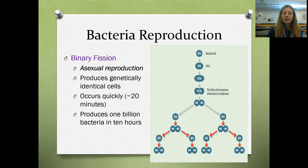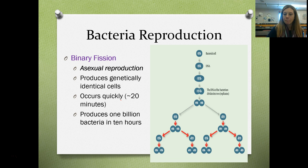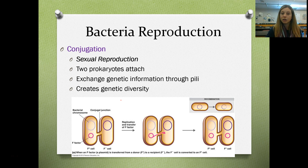Bacteria can reproduce in two ways — asexually or sexually. When bacteria reproduce asexually, it's called binary fission, essentially the same as mitosis — it produces genetically identical cells and happens very quickly, going from one to one billion in just hours. Conjugation is a form of sexual reproduction where two bacteria attach, join their pili together, and that pili acts as a bridge for genetic information to travel through, creating genetic diversity — a strong species is one that is genetically varied.